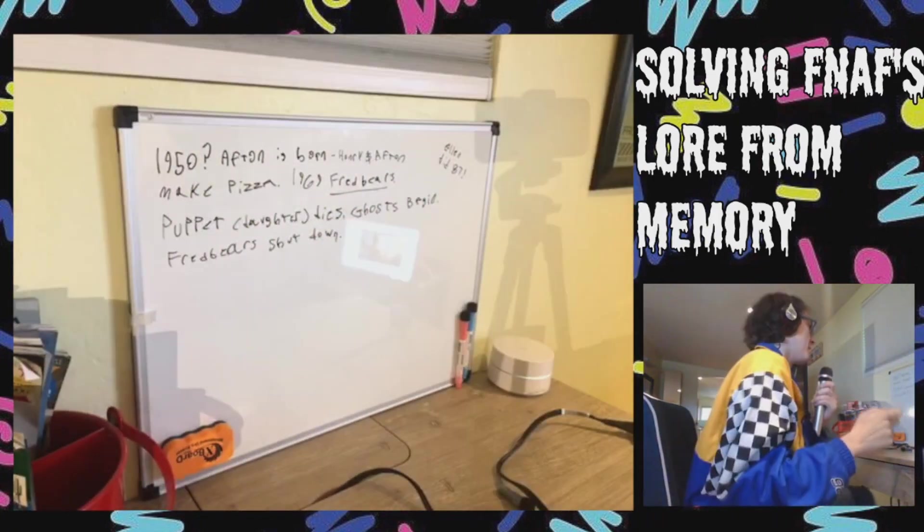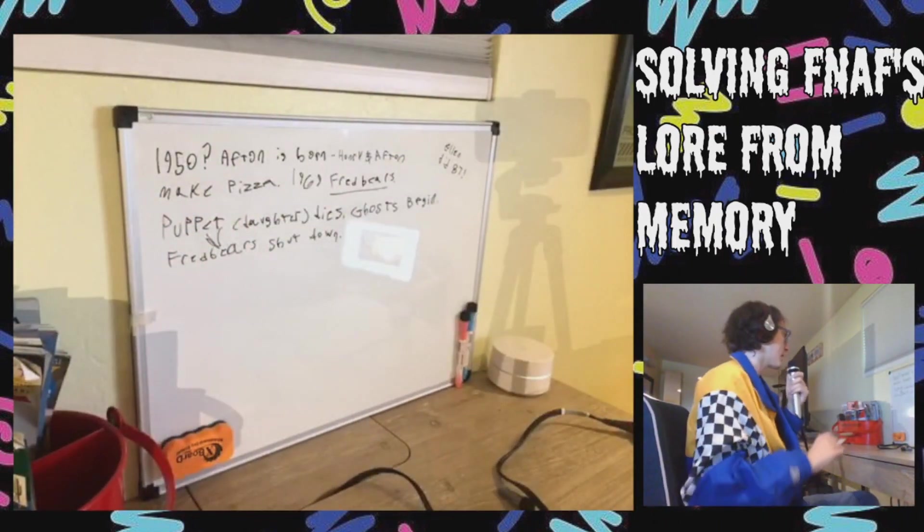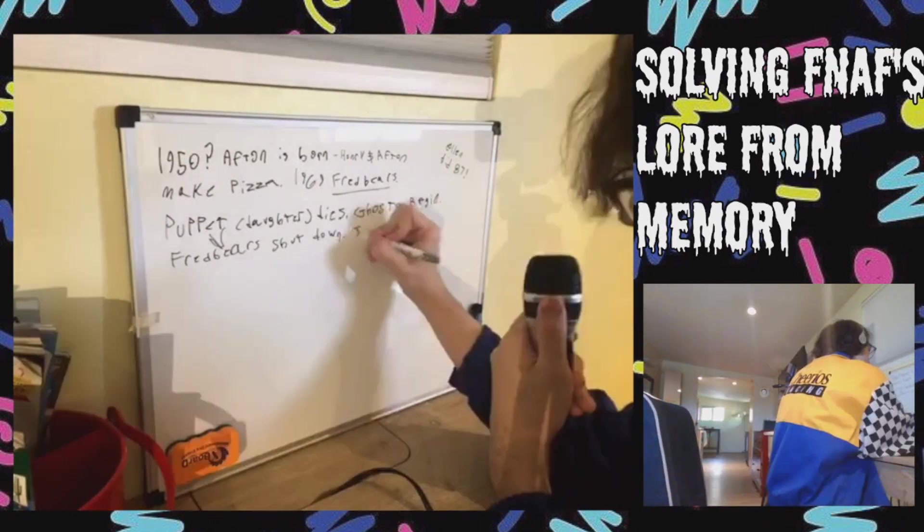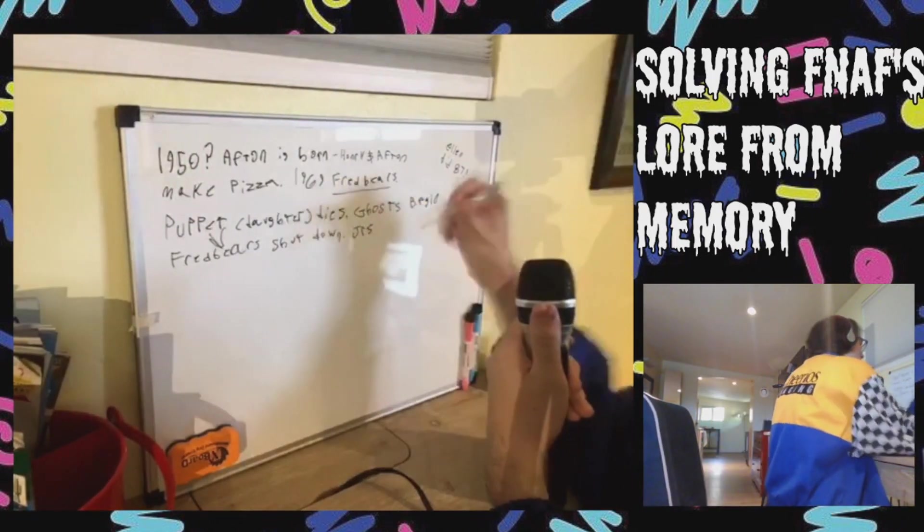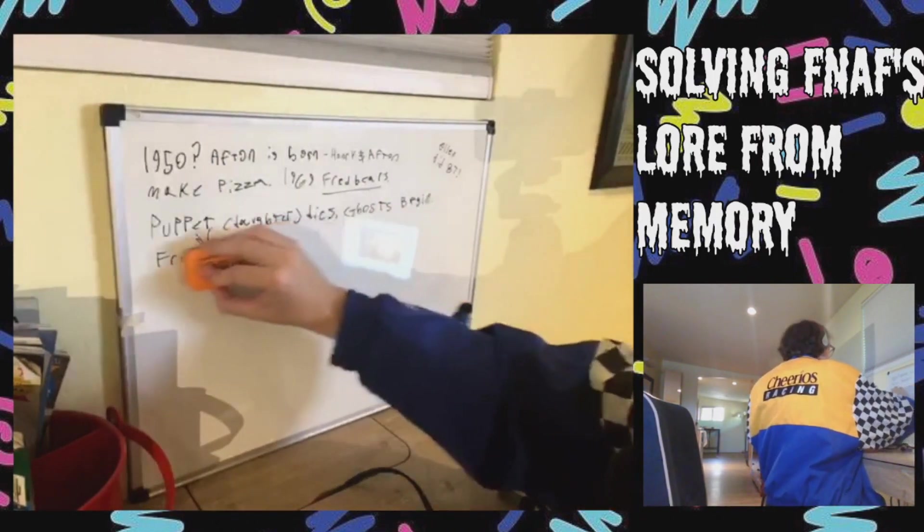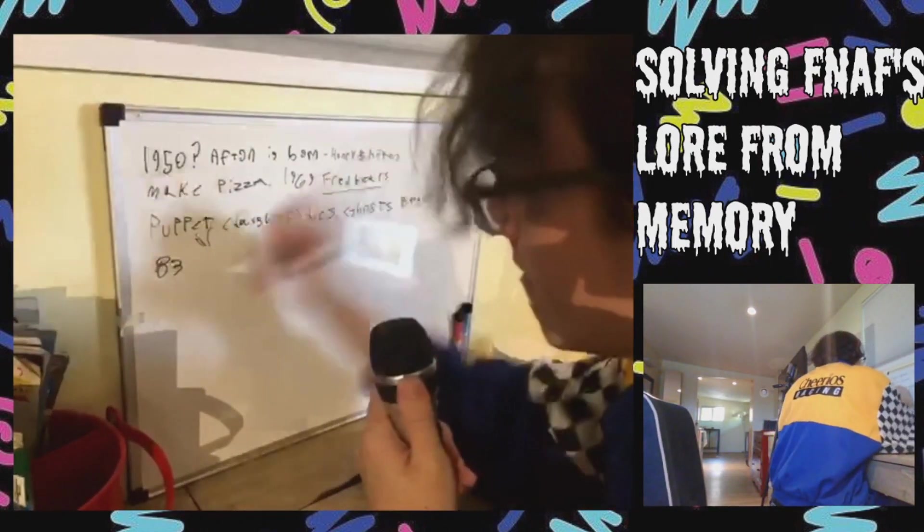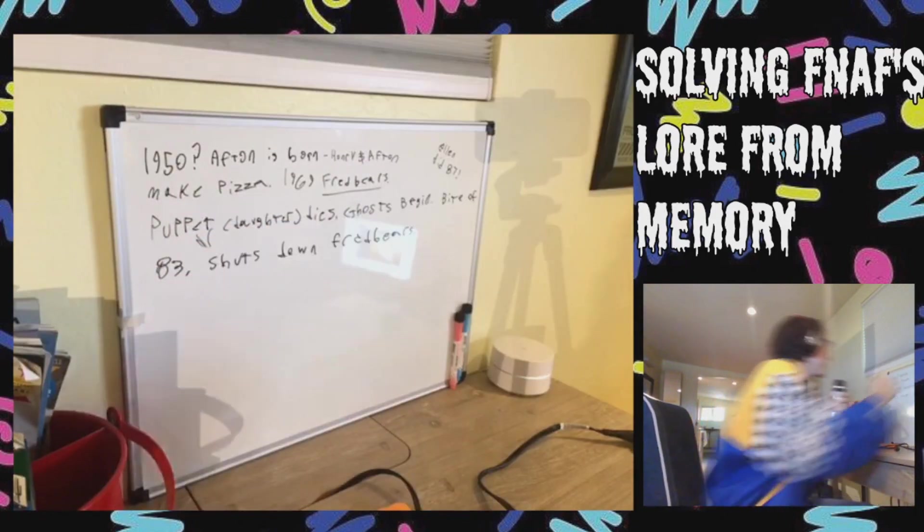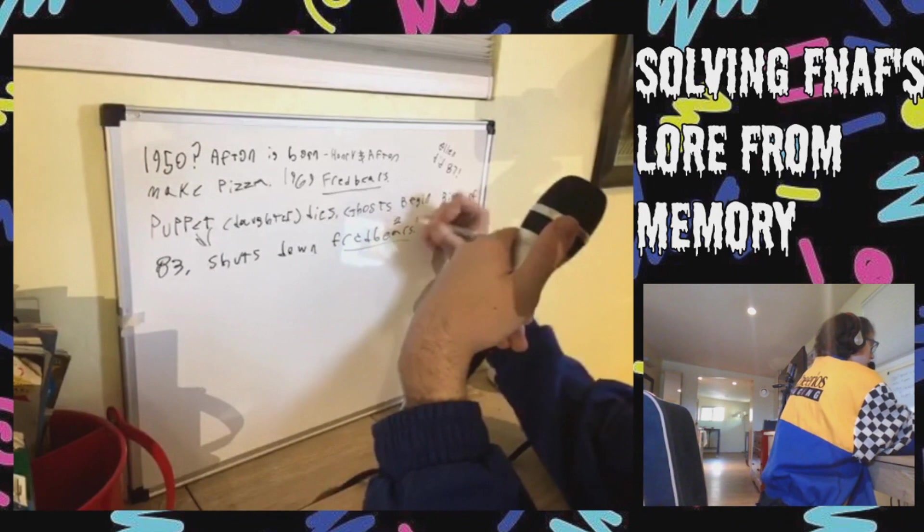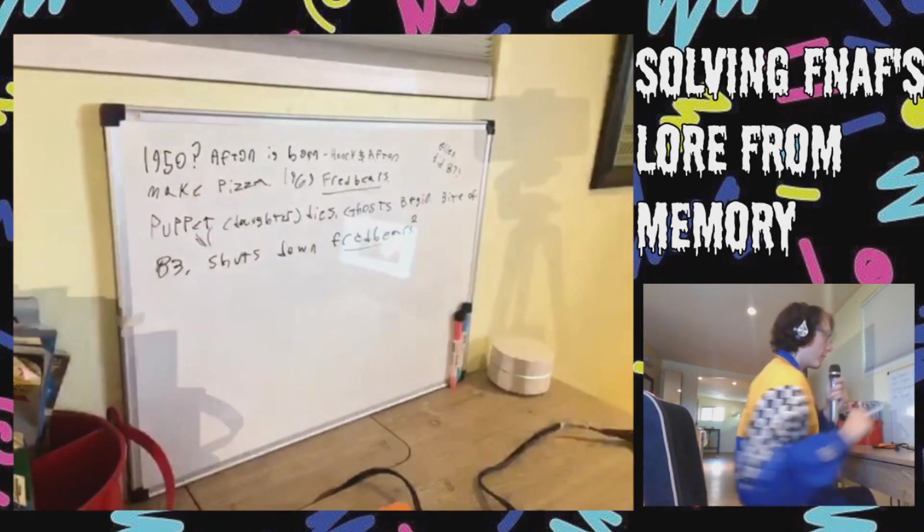I think then Fred Bears shuts down. After Fred Bears shuts down, by the way, the point is not to necessarily get this correct. The point is I want to see how crazy I become. Fred Bears is still around because the Bite of 87 happens. Or 83. And that shuts Fred Bears down. So there's two Fred Bears. We're just gonna make Fred Bears two. Fred Bears two. Bite of 83 shuts down Fred Bears two.